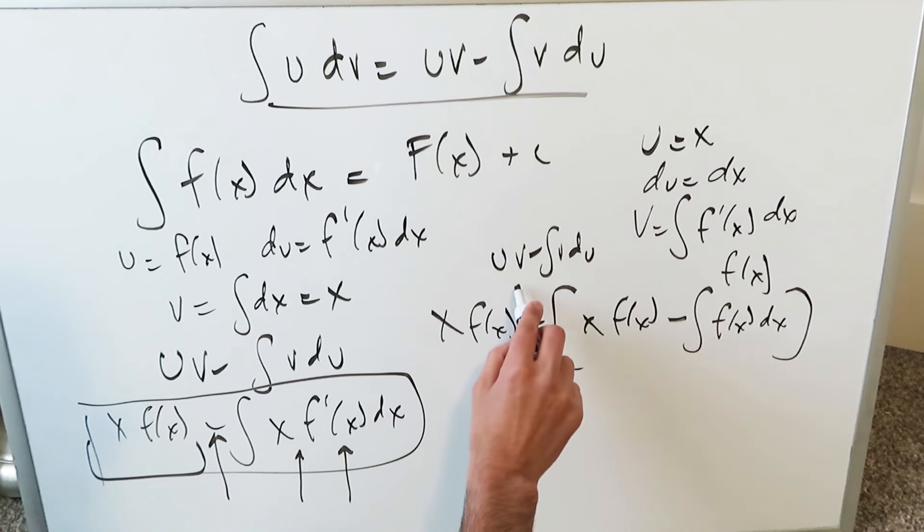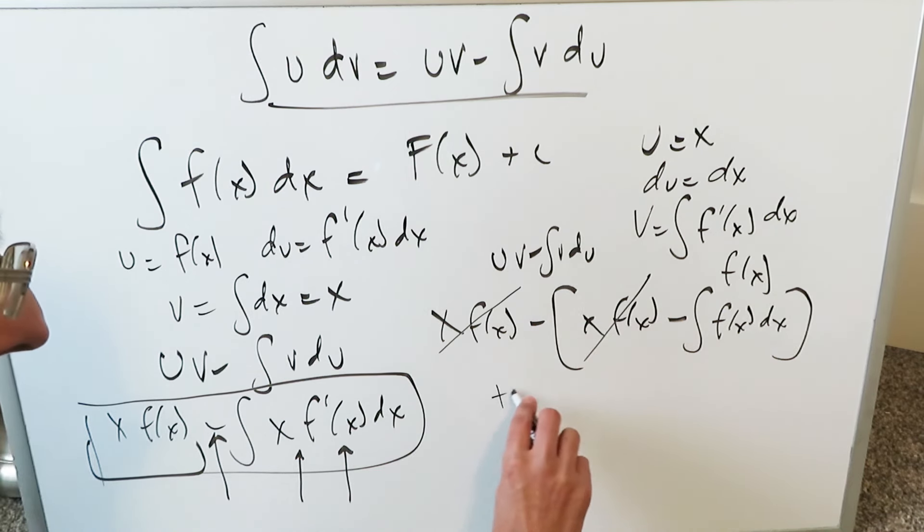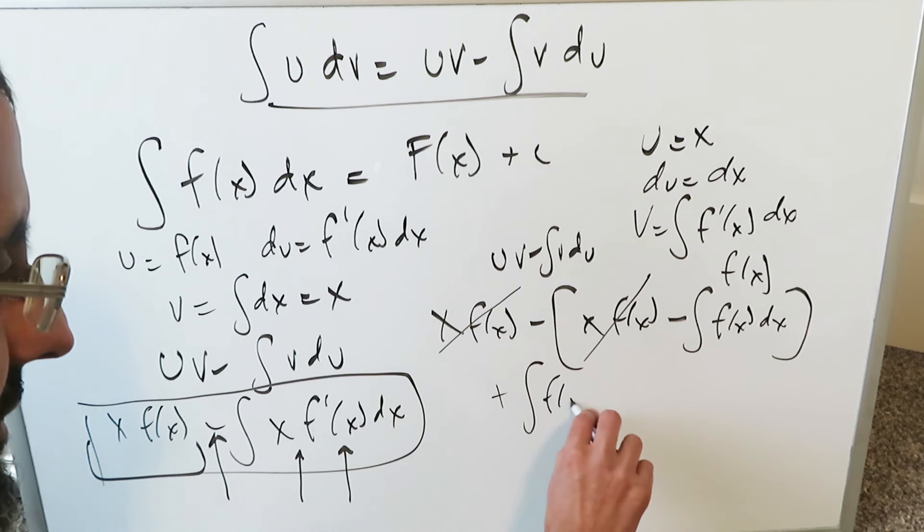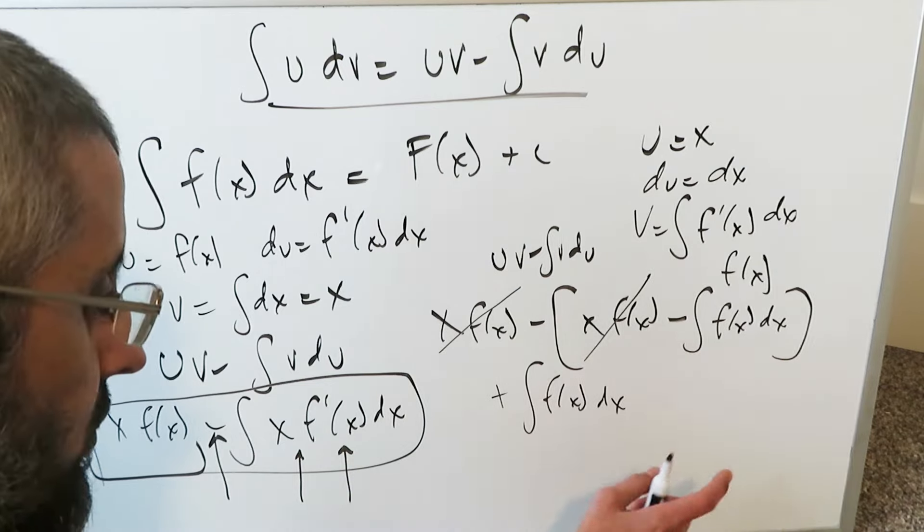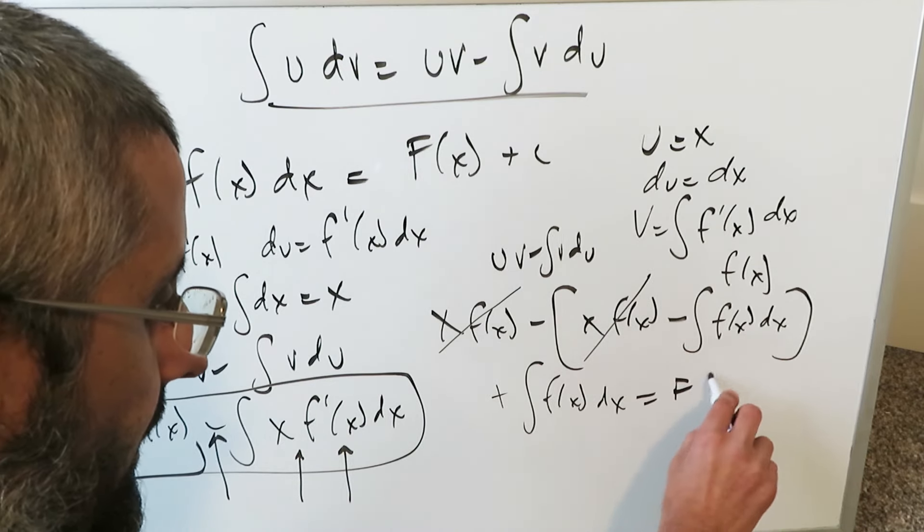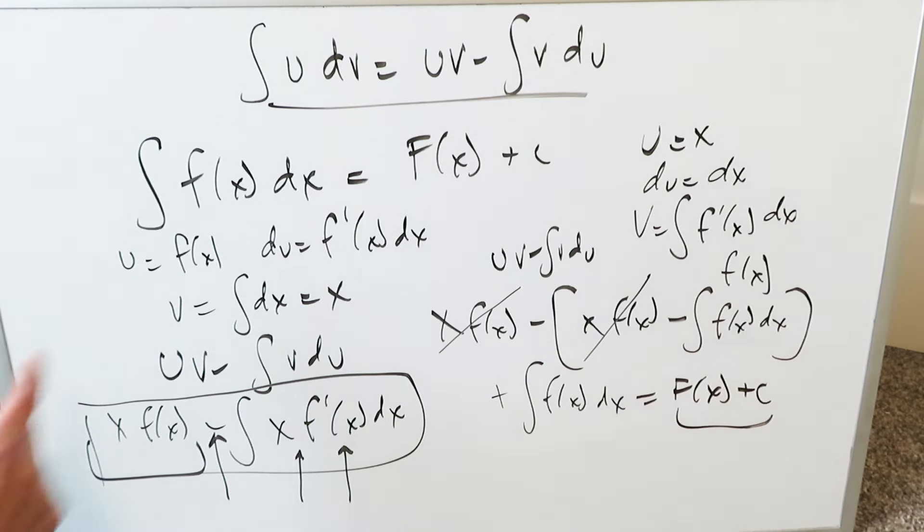And what are you going to get when you open this up? x f(x) minus x f(x) will cancel out. The minus minus will become a positive. You'll have an integral f(x) dx. You are ending up exactly where you started. When you run this through, you're getting your anti-derivative plus c, the anticipated and expected outcome that you wanted all along.